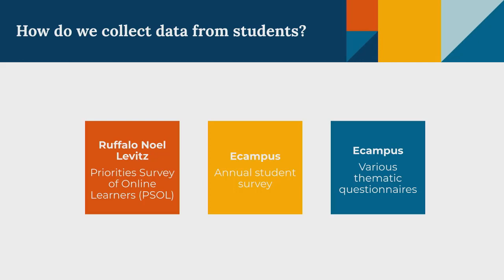A couple of things came to the surface. Number one, we decided to partner with a vendor called Ruffalo Noel Levitz to administer the Priority Survey for Online Learners — that's primarily the data we're using today. Second, we revised our annual student survey that goes out to eCampus students, making it leaner and more actionable. Third, we're adding thematic questionnaires throughout the year to get more specific information about students' experiences navigating OSU.